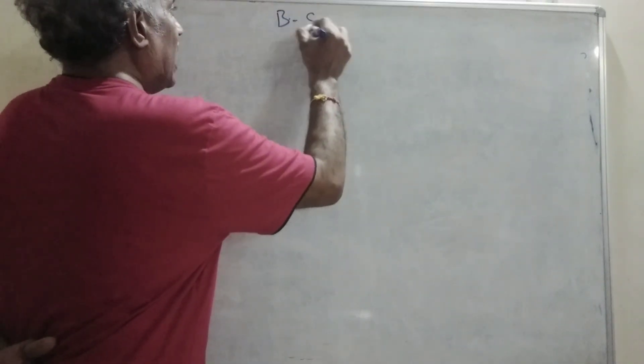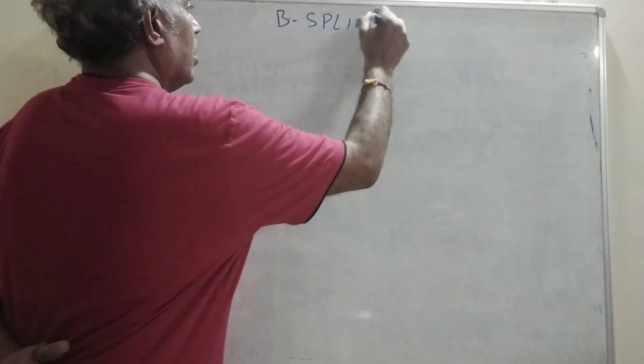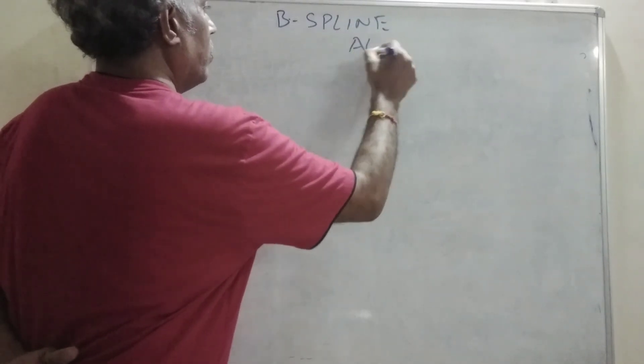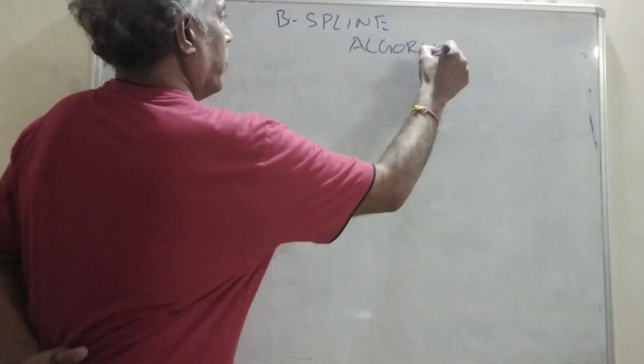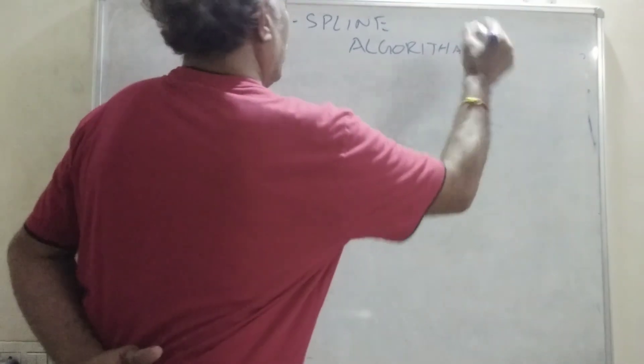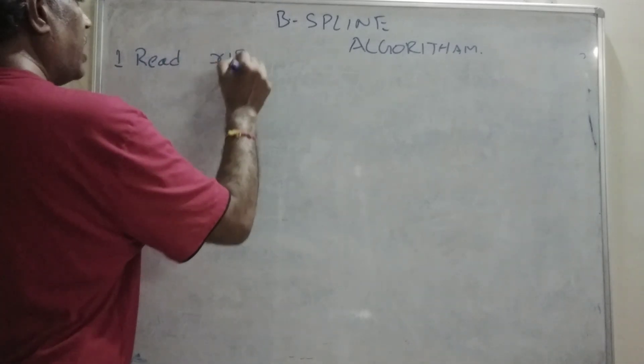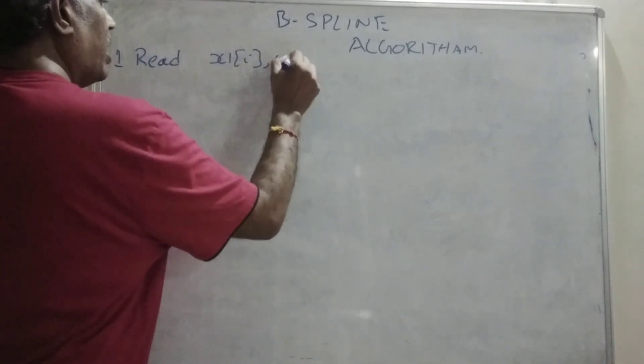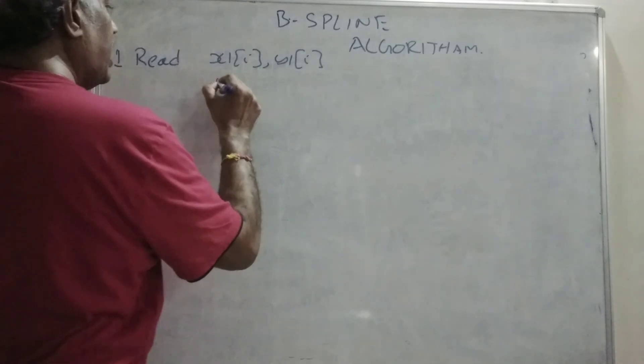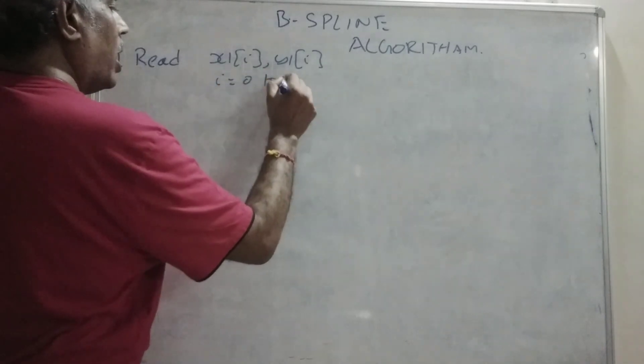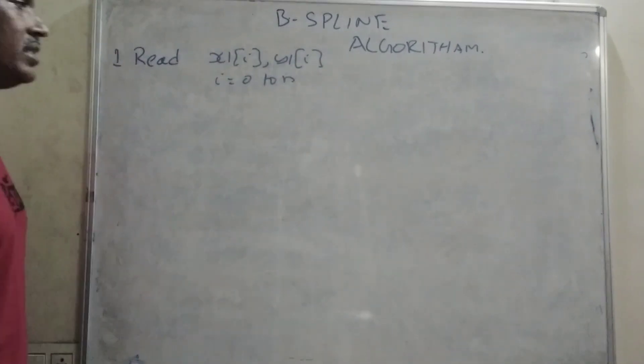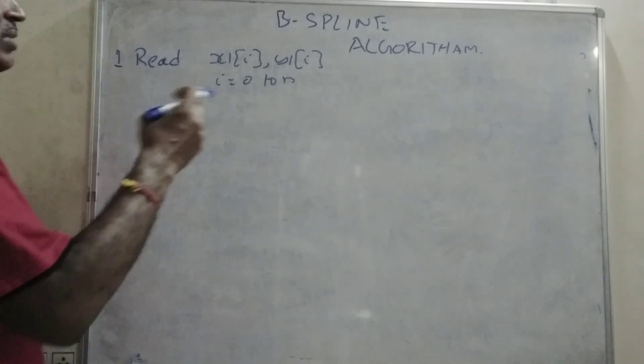So, B-spline algorithm. Now in the first step, read the control points data, x1i, y1i, and i is equal to 0 to n. That means for n coordinates, n degree, n-plus-1 control points are required.